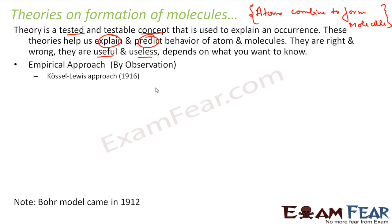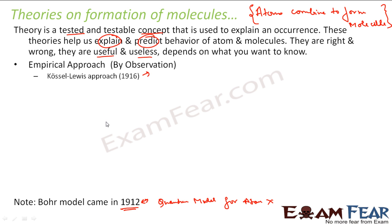The first theory, by observation, was given by Lewis in 1916. Please note the Bohr model came in 1912 — this was the time when we got a fair picture of the atom. Till this point, the quantum model of the atom was not there. With that in mind and with observation, Lewis gave one approach — one theory to understand the structure and behavior of molecules.